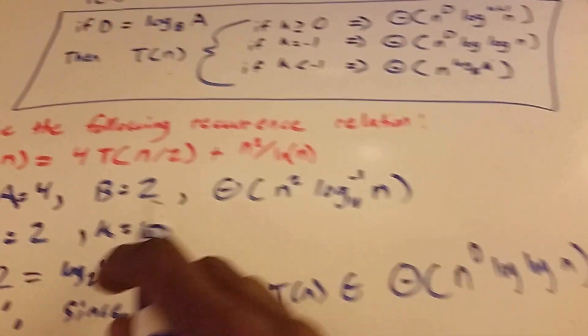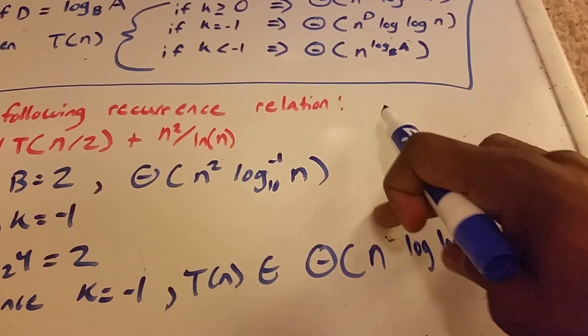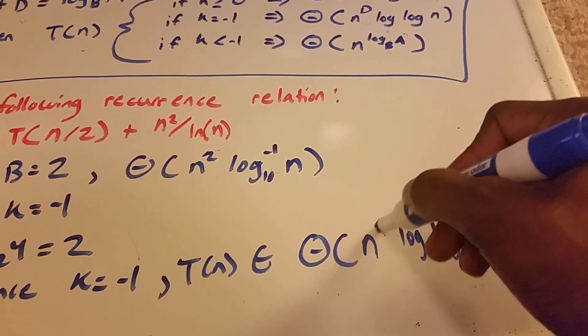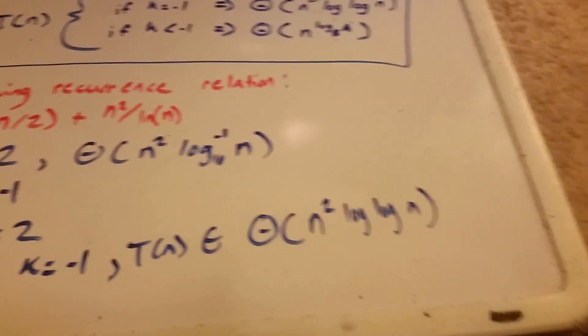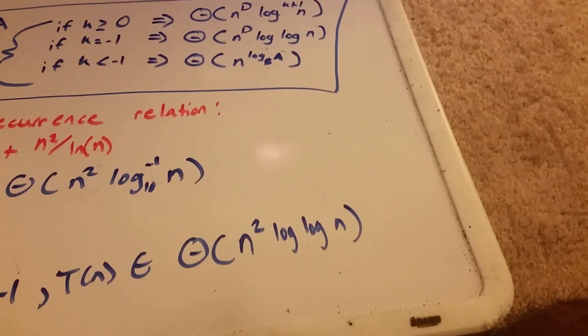And our D value was 2. So it's n² log(log(n)).